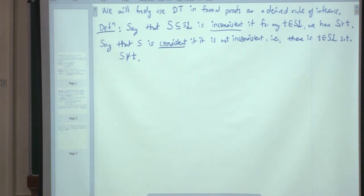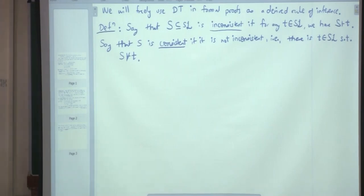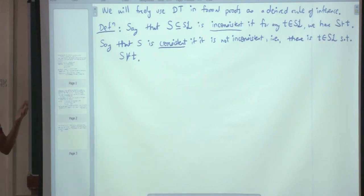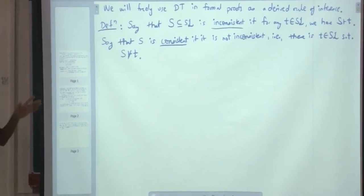We would like some examples. Can you give me one example of an inconsistent theory? P and negation P — or in general, S and negation S, where S is any formula. In the filter language, S and negation S by conjunction generate zero, the contradiction, and from contradiction you can prove anything. That's the idea.